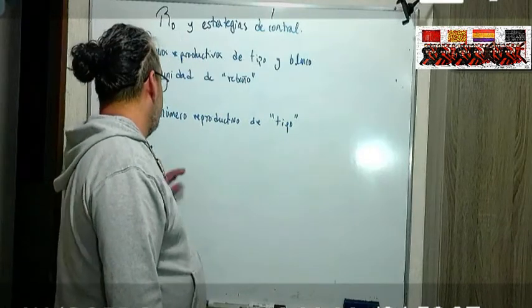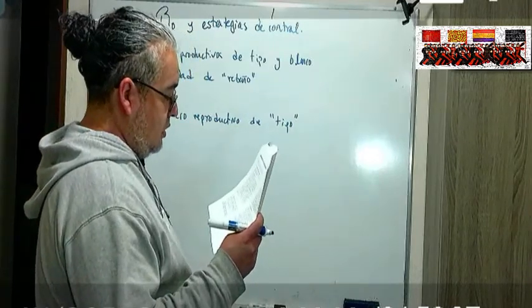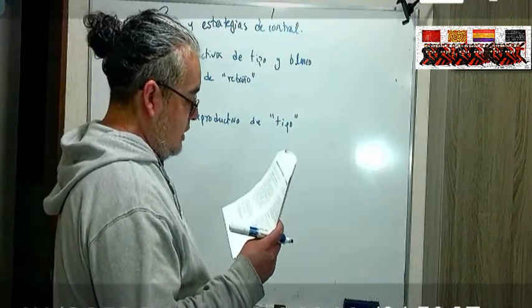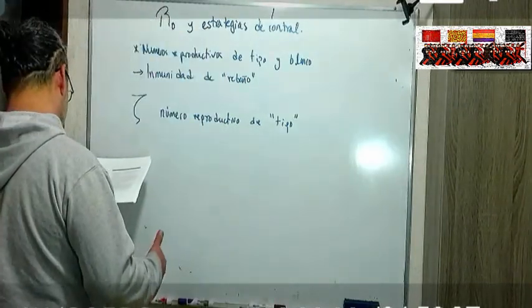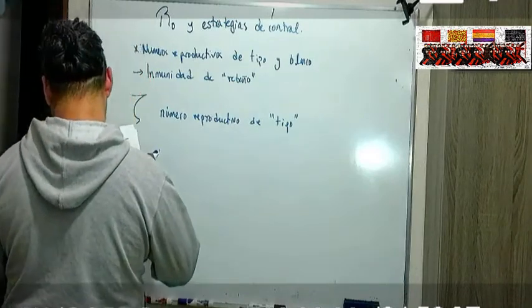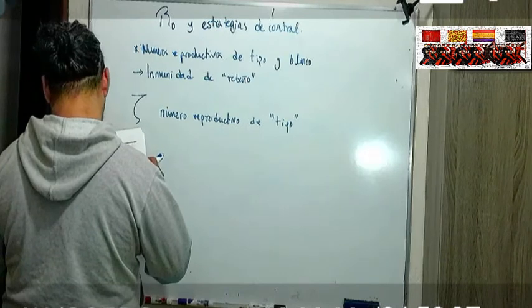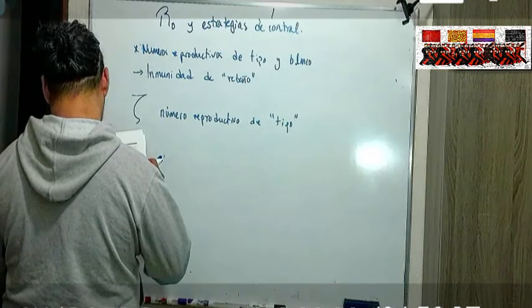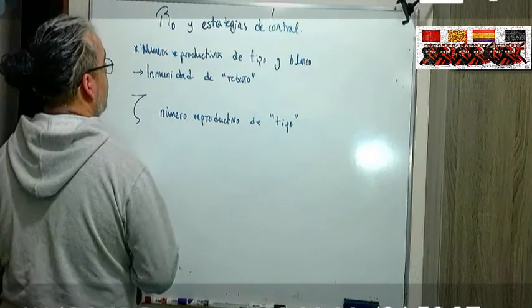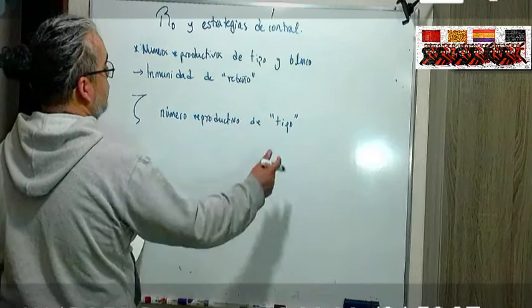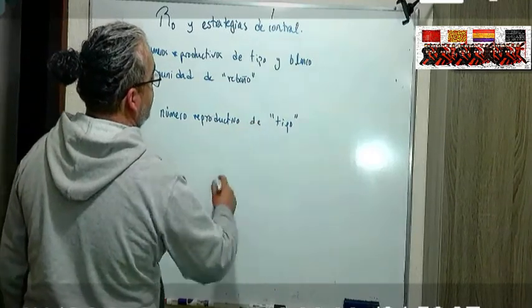Entonces a partir de allí se desarrolla este concepto de número reproductivo de tipo y el otro es el de blanco, que es... dentro de una misma población, cómo podemos distinguir los grupos vulnerables.